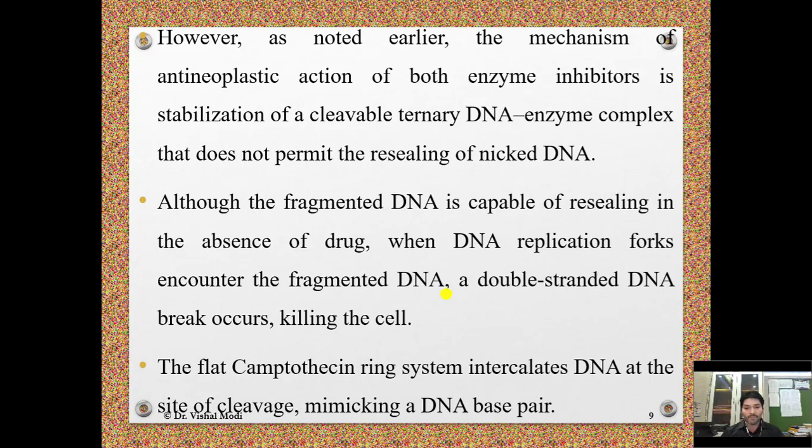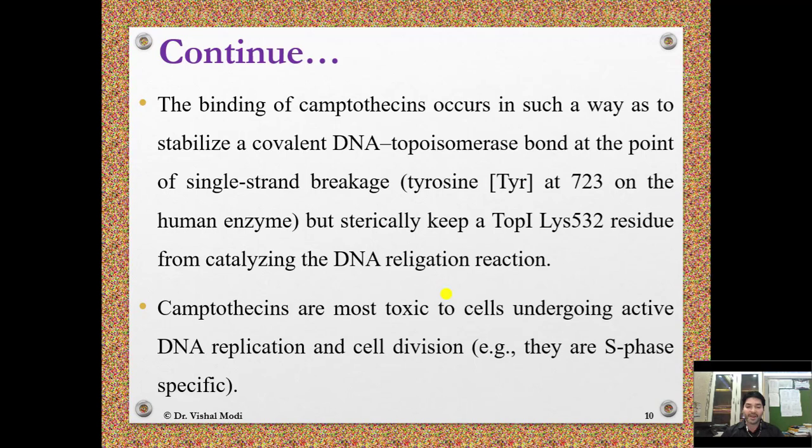The binding of camptothecin stabilizes a covalent DNA-topoisomerase bond at the point of single-strand breakage. They bind with tyrosine at position 723 on the human enzyme but sterically prevent topoisomerase 1 lysine 532 residue from catalyzing the DNA religation reaction. Camptothecins are most toxic to cells undergoing active DNA replication and cell division — they are S-phase specific.